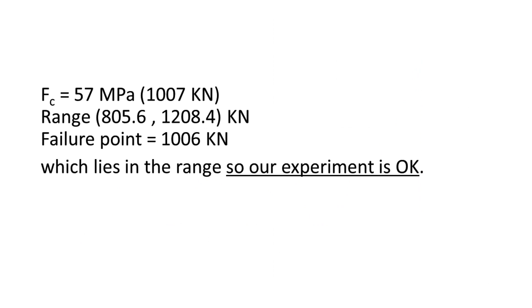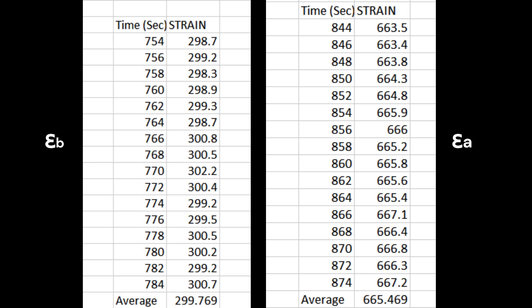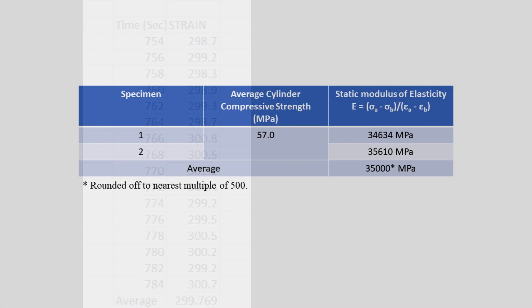The mean strain epsilon A and epsilon B respectively shall be calculated, and the static modulus of elasticity in compression is calculated. The static modulus of elasticity is reported as nearest multiple of 500. Hence we approximately take value as 35,000 MPa.